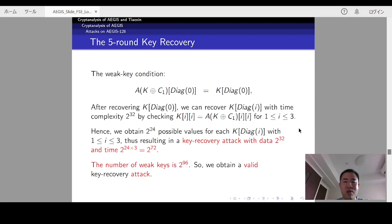After this phase, we will obtain 2 to the 24 possible values for each of the remaining diagonals of K. So, there are in total 2 to the 72 possible candidates for the whole K. And therefore, the time complexity of the key recovery attack is 2 to the 32 and data complexity is 2 to the 32. Since the number of weak keys is larger than the time complexity of our attacks, we obtain a valid key recovery attack.